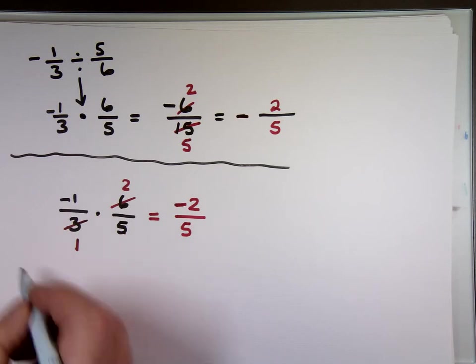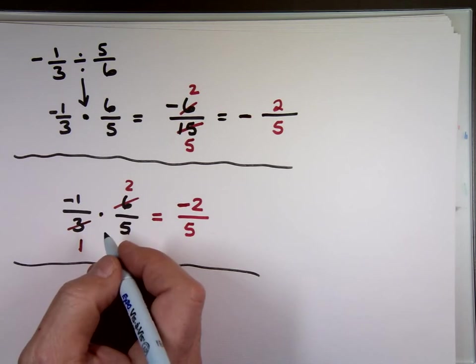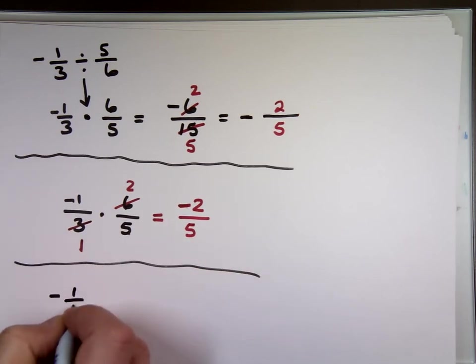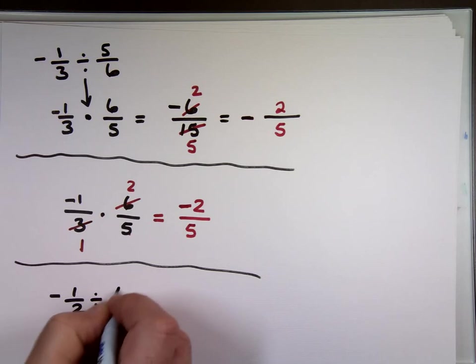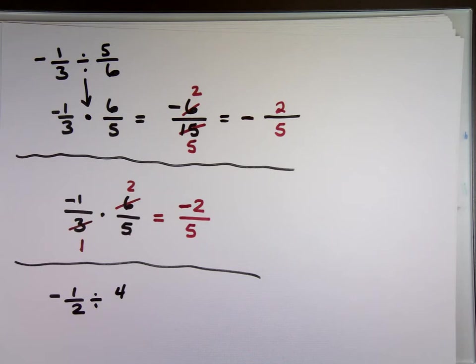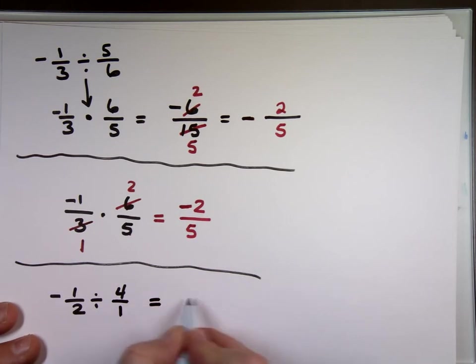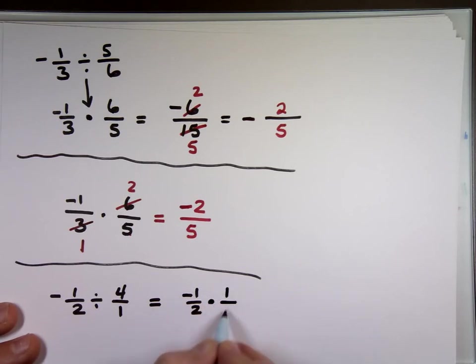Let's try another fraction here. Negative one-half divided by the four. The four can be written four over what? One. So let's apply that rule. Negative one-half times the reciprocal of four over one, which is what? One over four.